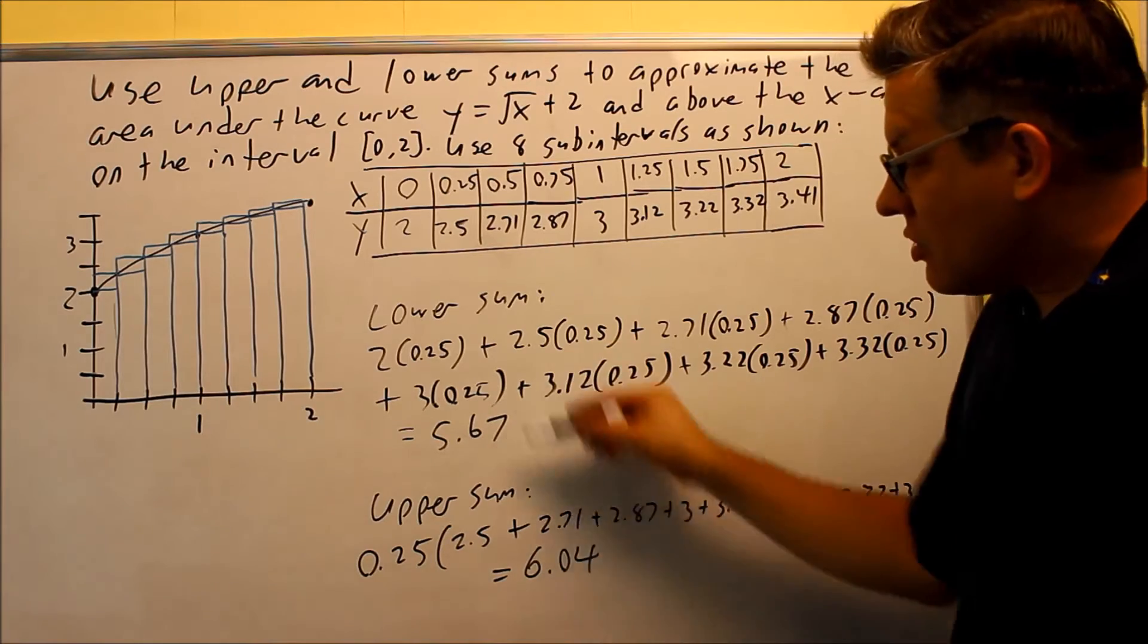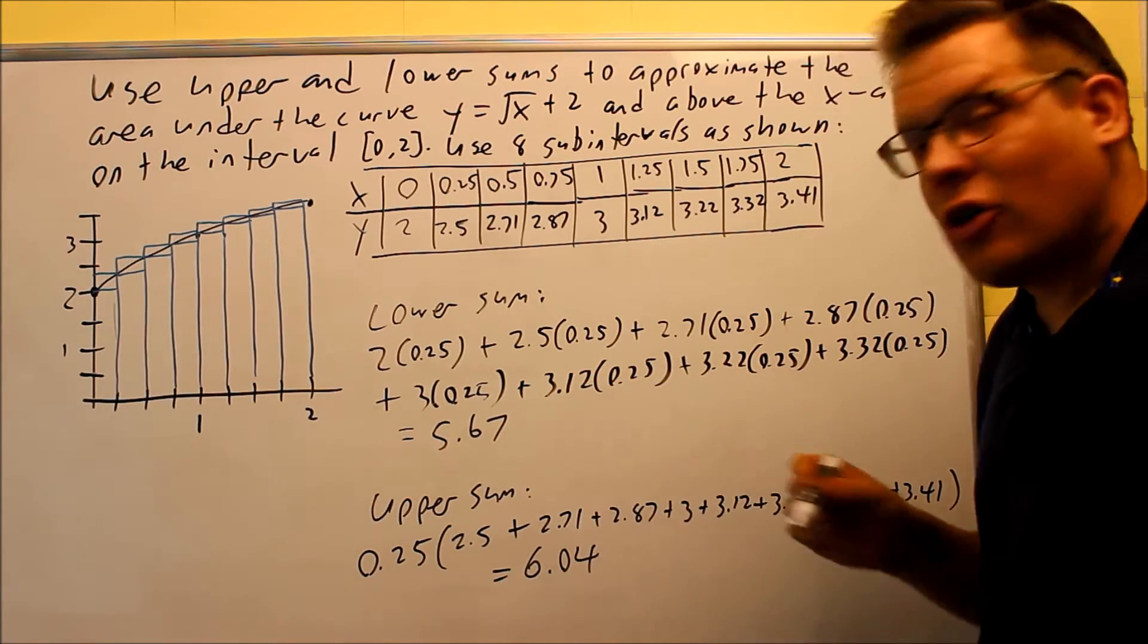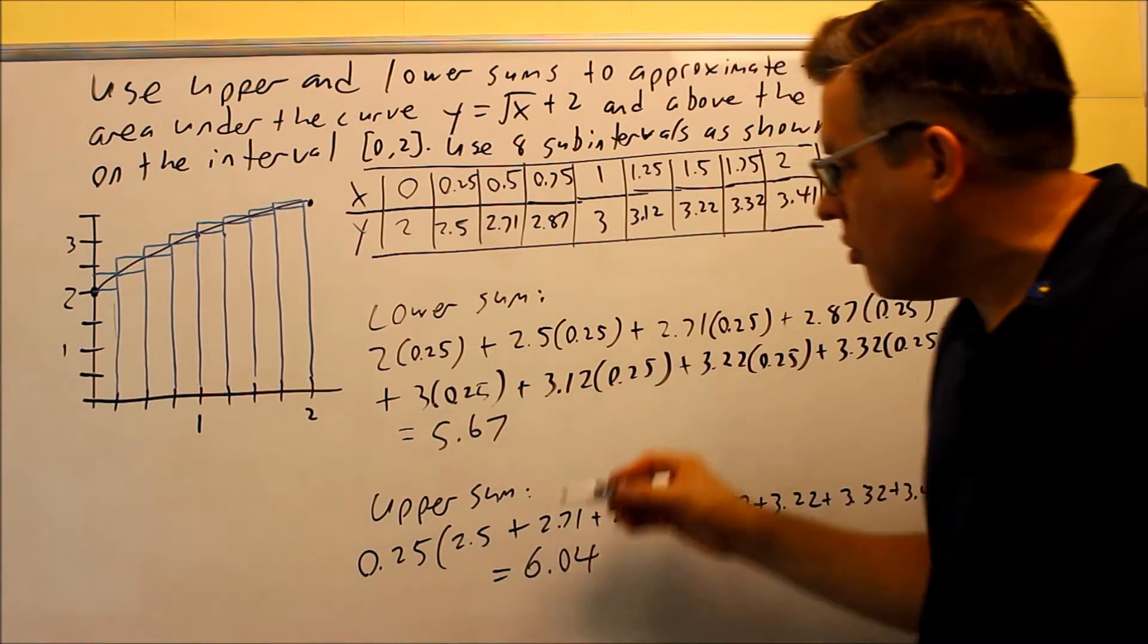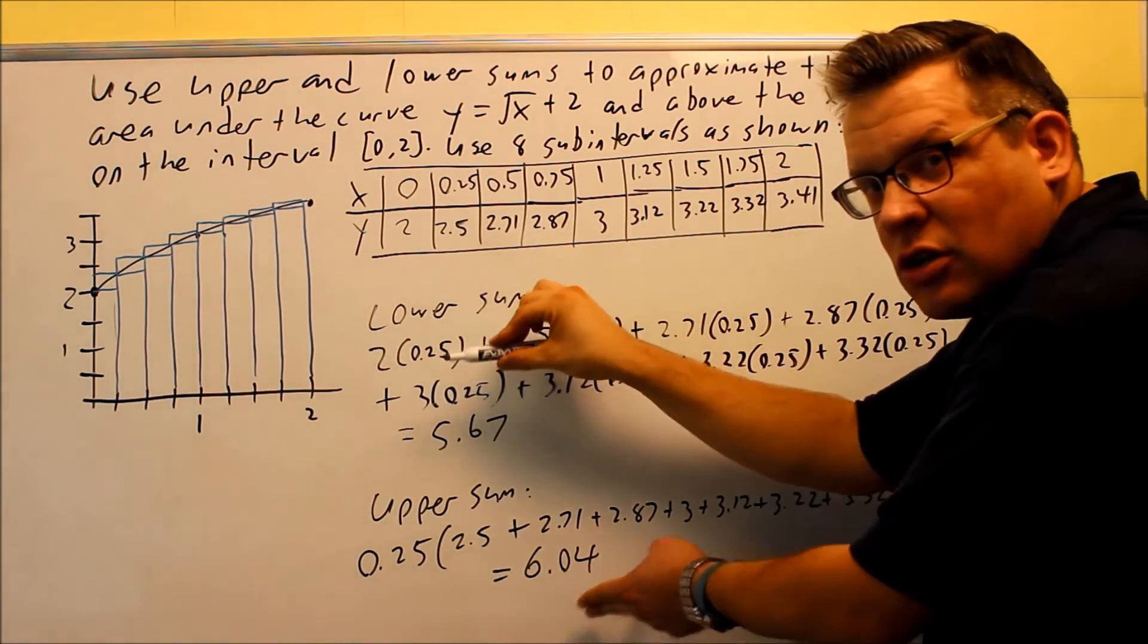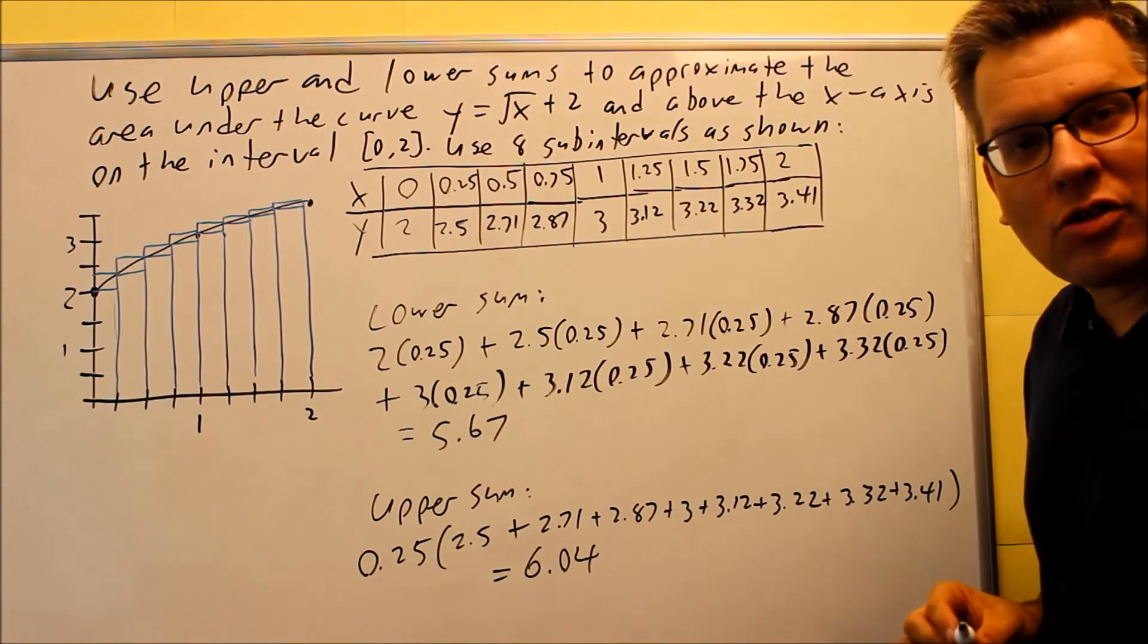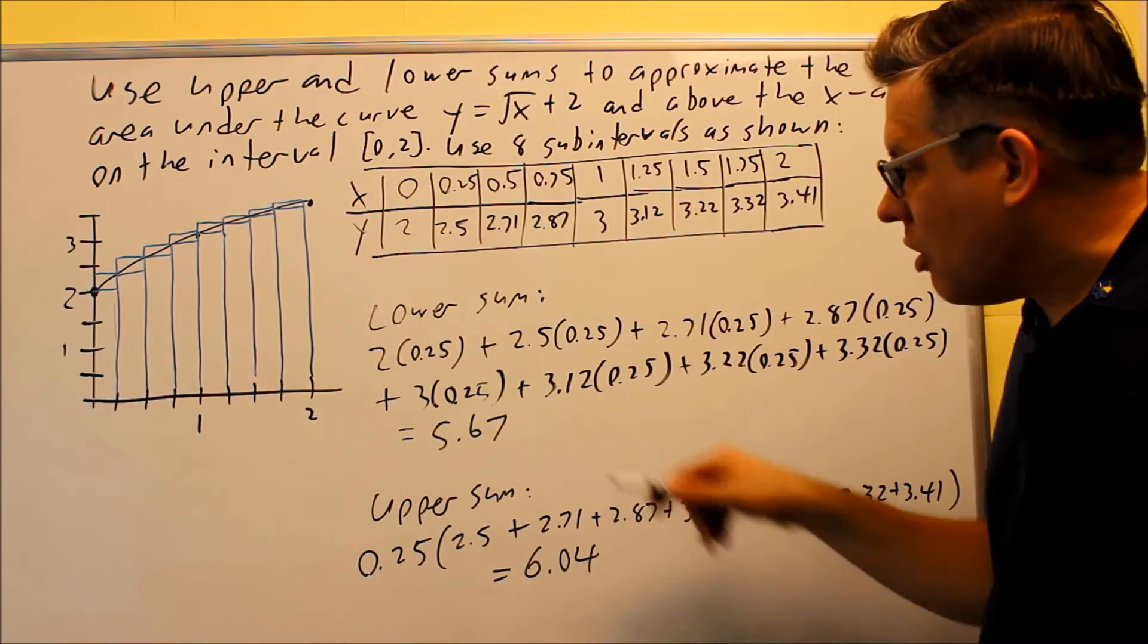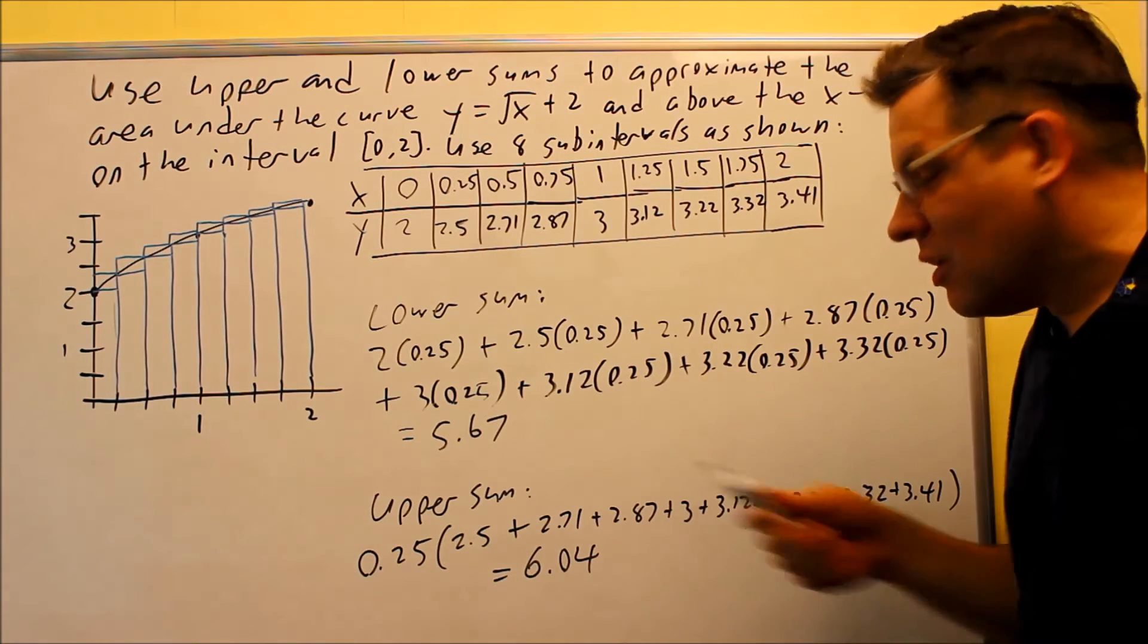So notice that these two areas are pretty close to each other, 5.67 and 6.04. So the more rectangles that you use, this window is actually going to shrink, and these will get closer and closer to what the actual area is. So we know that the actual area is going to be somewhere between these two numbers, between 5.67 and 6.04.